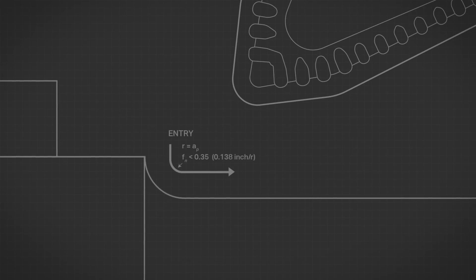As prime turning starts the cut at the shoulder, it is important to always use feed reduction and a radial entry to maintain tolerances.